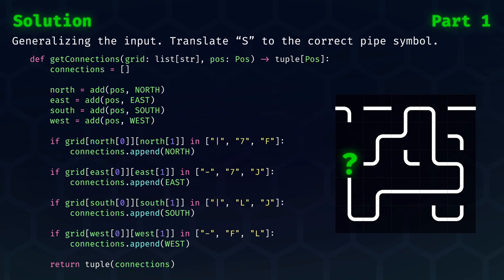The algorithm which I propose just checks if the field to the north connects to the south and so on. The connections get returned as a tuple, again because tuples are hashable, which is required for the lookup in the dictionary.